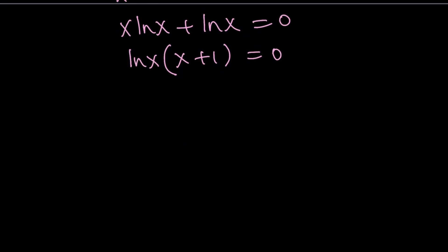So let's go ahead and check each case. If ln x is equal to 0, this implies x equals 1. And the second one, x plus 1 equals 0, implies x equals negative 1.